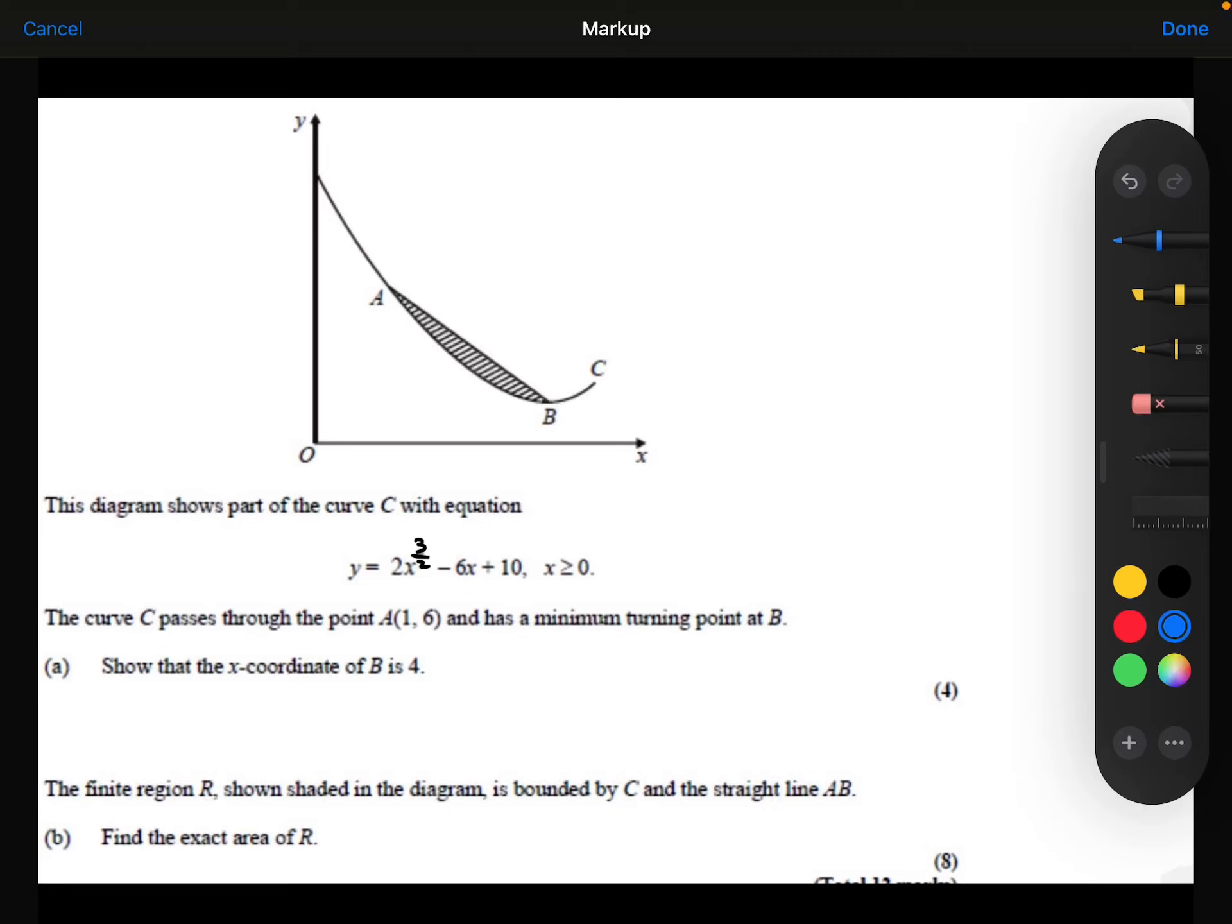The diagram shows part of the curve C with the equation y equals 2x to the power 3 over 2 minus 6x plus 10, where x is greater than or equal to 0.